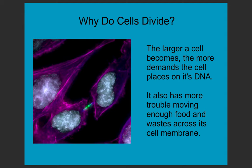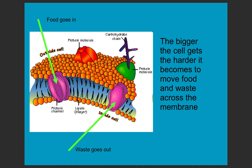Why do cells divide? First, it can be a size requirement. The larger a cell becomes, the more demands it places on its DNA, and it also has trouble bringing food across its membrane, getting nutrients, and getting rid of waste products. We have a less favorable surface area to volume ratio, which makes it more challenging for the cell to receive nutrients and signal with other cells and molecules. As the surface area to volume ratio drops, there are fewer protein channels but greater energy demands, so it becomes hard for the cell to keep up.